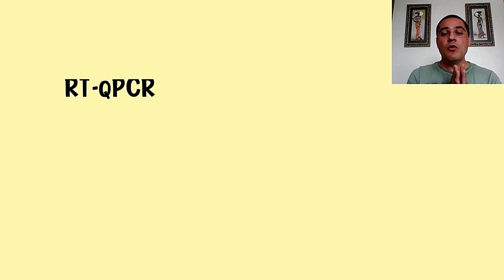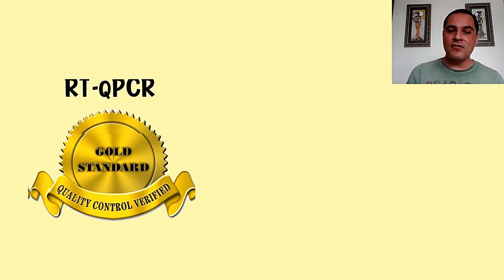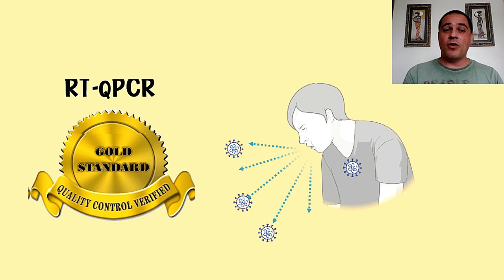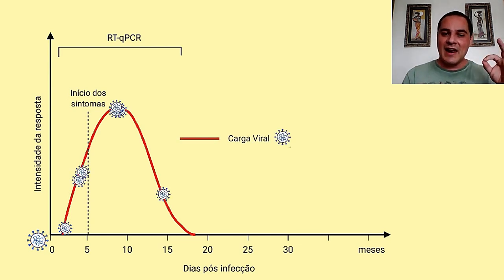Lembrem que essa técnica é uma técnica padrão ouro porque ela é quantitativa — a gente consegue pegar quantidades muito baixas do vírus, dando um diagnóstico muito mais sensível do que as outras técnicas. Além disso, a gente consegue ver a presença do vírus nos estágios iniciais da doença e ainda consegue ver a carga viral do paciente naquela amostra coletada. Nos próximos vídeos, iremos falar sobre os testes rápidos do diagnóstico, também chamados de testes sorológicos, que detectam os vírus de maneira indireta. Espero que vocês tenham gostado — não esqueçam de deixar seus comentários e dúvidas, se inscrever no canal e acompanhar os próximos vídeos.